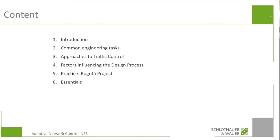We prepared a short summary of common engineering tasks — what tasks all of us involved in the design of traffic lights have to do on a day-to-day basis. Then approaches to traffic control: the basic modes and ways you can control signals. The main part, chapter four, covers factors influencing the design process — what decisions we make when designing a traffic light or an ITS solution, both on the local and network level.